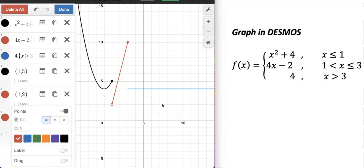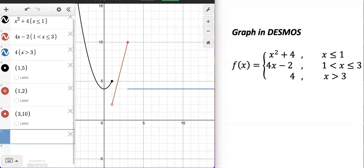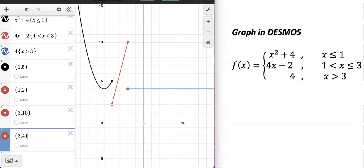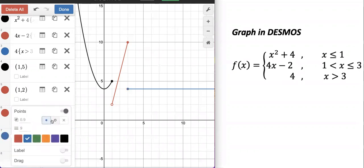Finally, for the last endpoint, x must be strictly greater than 3, so we're going to add the point 3, 4 here. And we just have to make this circle blue and hollow, right? Hollow circle or empty circle. Done.